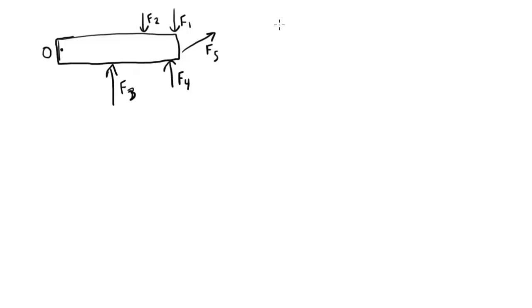So we call FR, the resultant force, just the sum of all the forces. So in this case, that's F1 plus F2 plus F3 plus F4 plus F5. And of course, I drew one of them in a strange direction, so we need to keep track that this is vector addition, even though in two dimensions it'll be really simple.